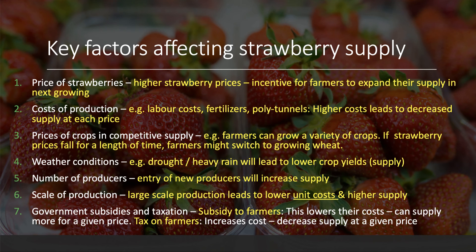Finally, the government can have quite a big effect on supply in various ways. If the government offers a subsidy to strawberry growers — perhaps subsidising the cost of fertiliser or polytunnels — that subsidy lowers their costs, and therefore they can supply more to the market for a given price. On the other hand, a tax on farmers increases costs. For example, a carbon tax affecting farming or a tax on fertilisers on environmental grounds would increase costs, and higher costs mean decreased supply at each price.